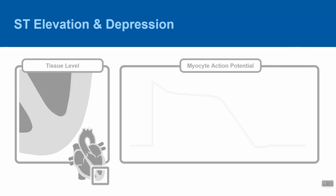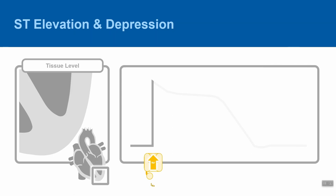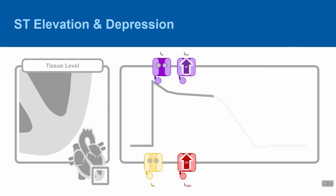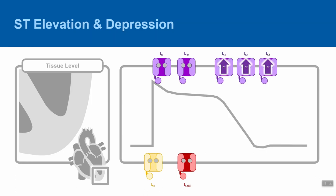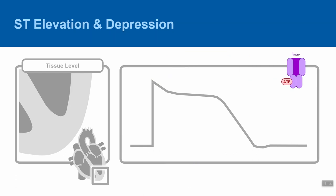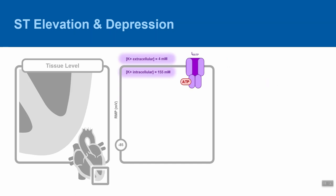Myocyte depolarization starts with an influx of sodium through a voltage-gated sodium channel, followed by a brief efflux of potassium, then the simultaneous influx of calcium balanced by efflux of potassium, generating the plateau phase of the myocyte action potential. One important channel for maintaining the resting membrane potential is not voltage-gated but nucleotide-gated, specifically by ATP and ADP. When ATP is abundant, the channel remains closed, maintaining extracellular potassium at 4 millimole versus intracellular 155 millimole, yielding a resting membrane potential of about negative 85 millivolts.